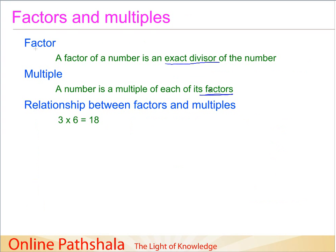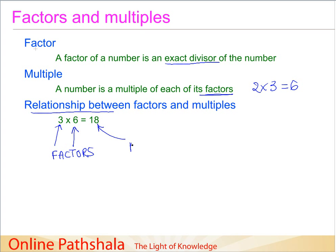For example, two multiplied by three is six, so six is a multiple of both two and three, and two and three are factors of six. Another example: three multiplied by six is eighteen. Here, three and six are known as factors of eighteen, and eighteen is known as a multiple of three and six. Factors, when multiplied together, give us a multiple.